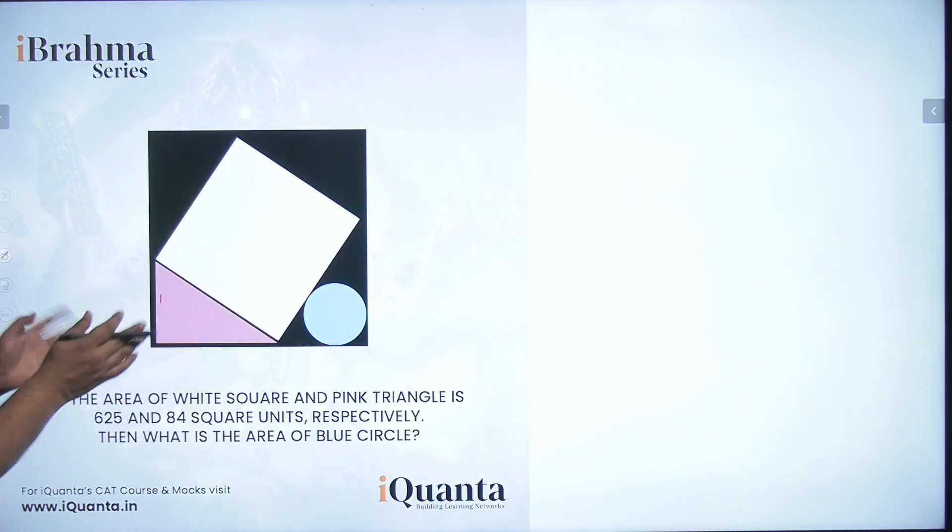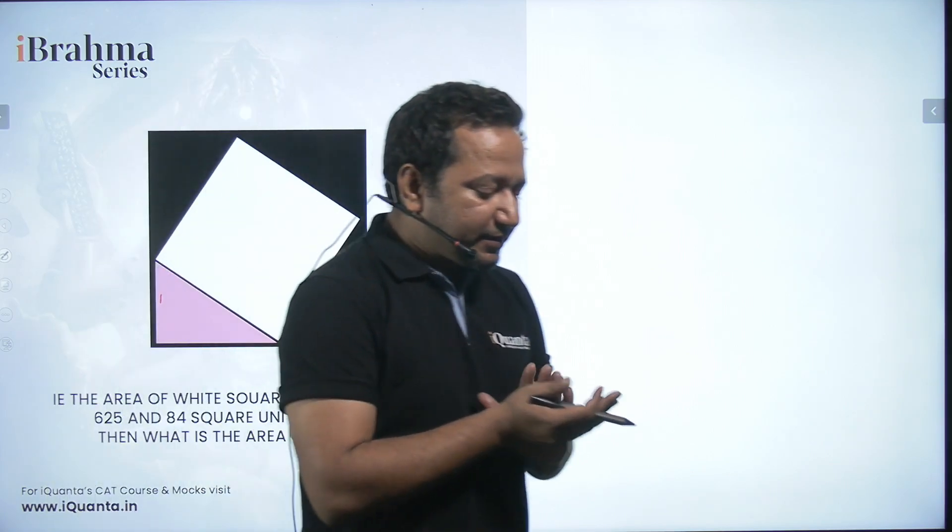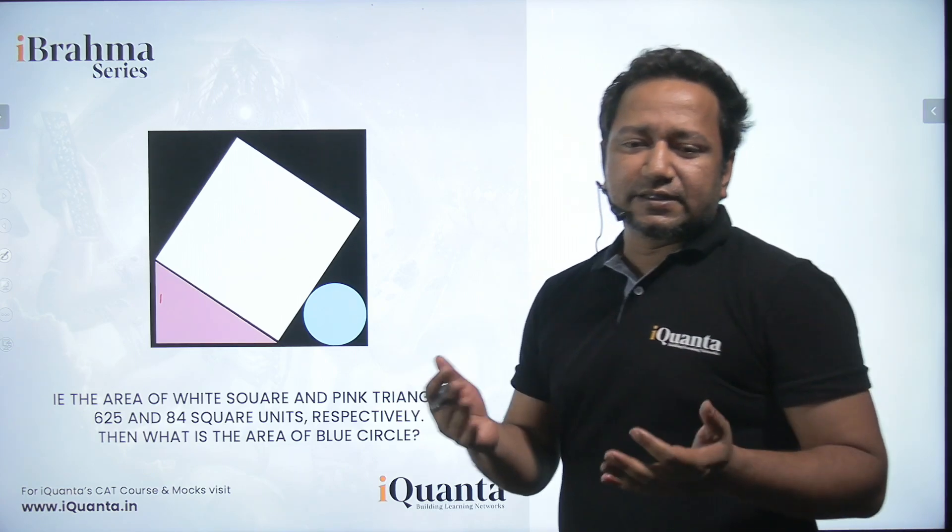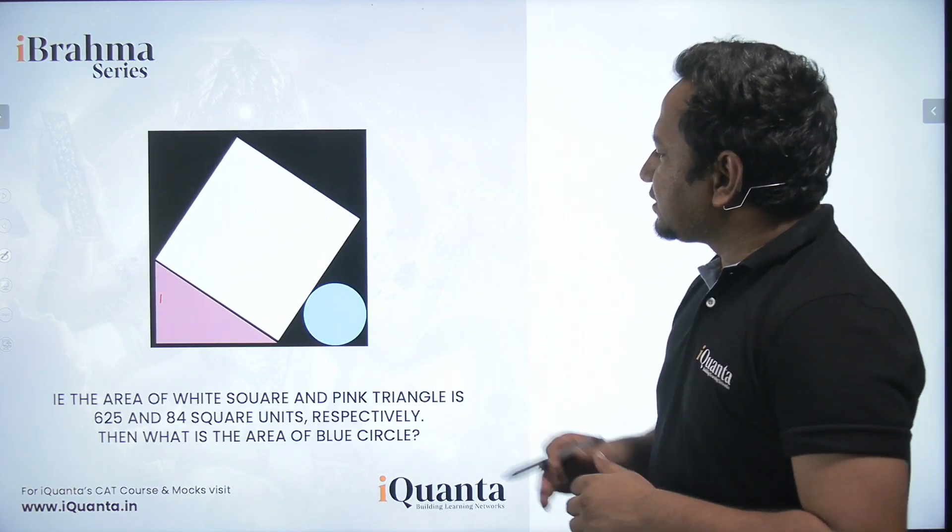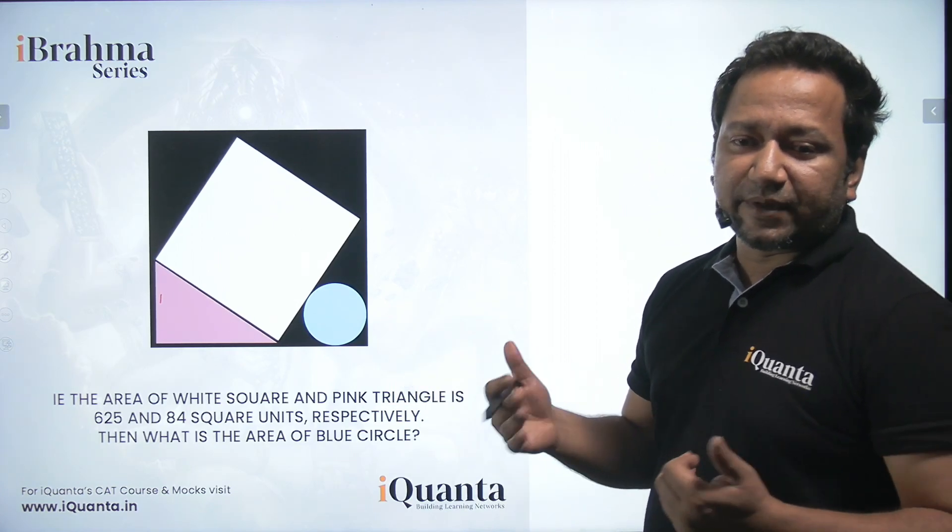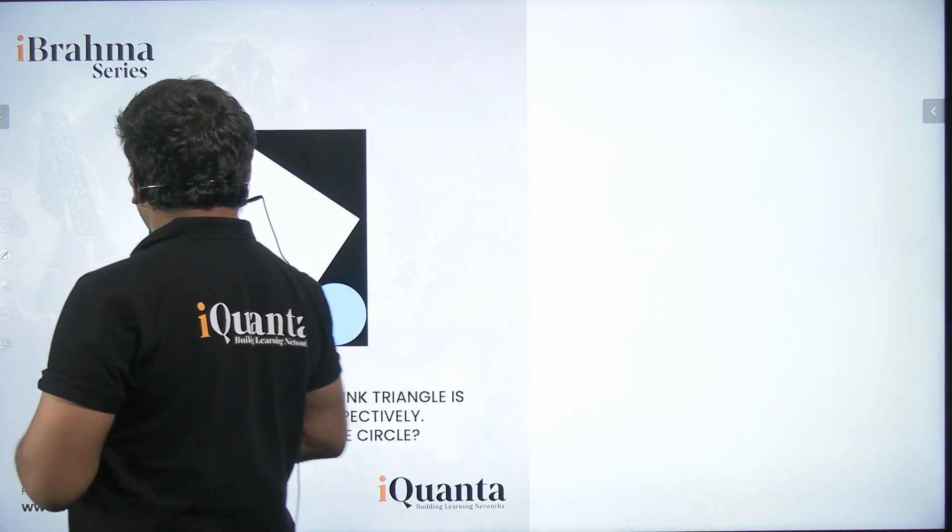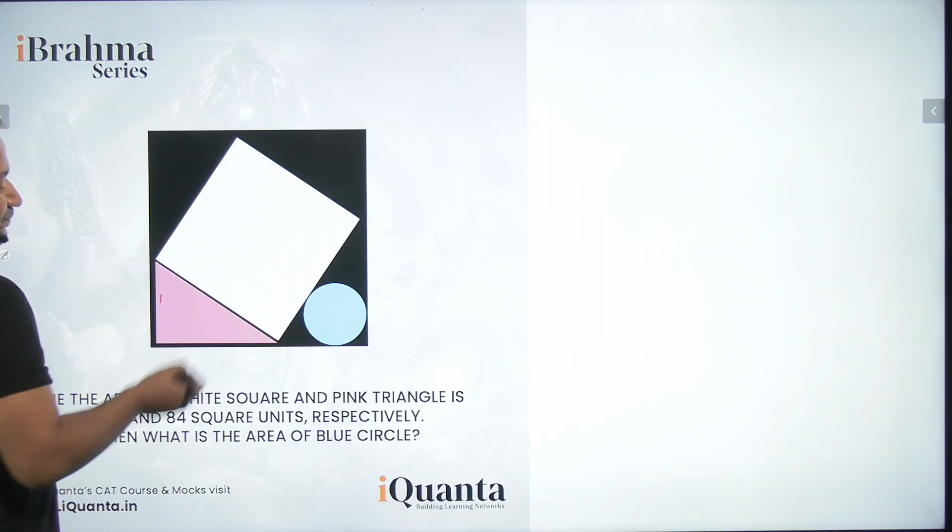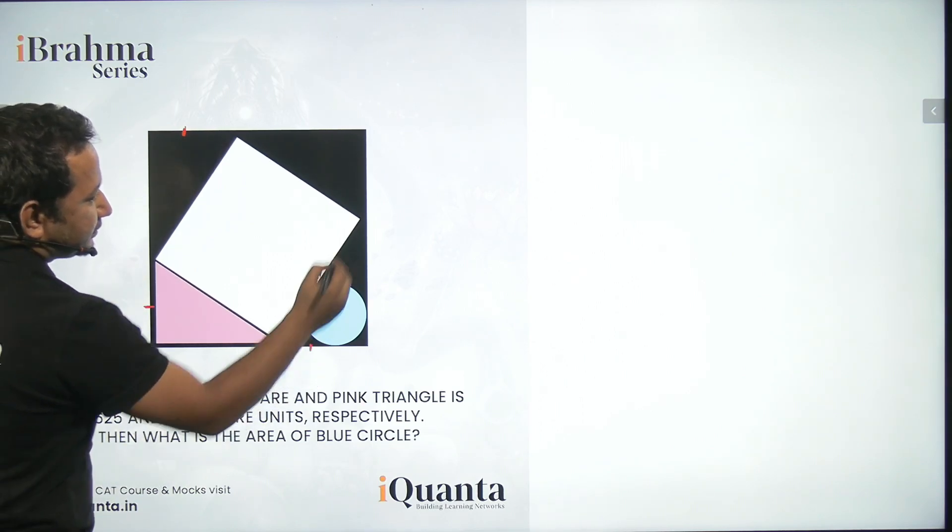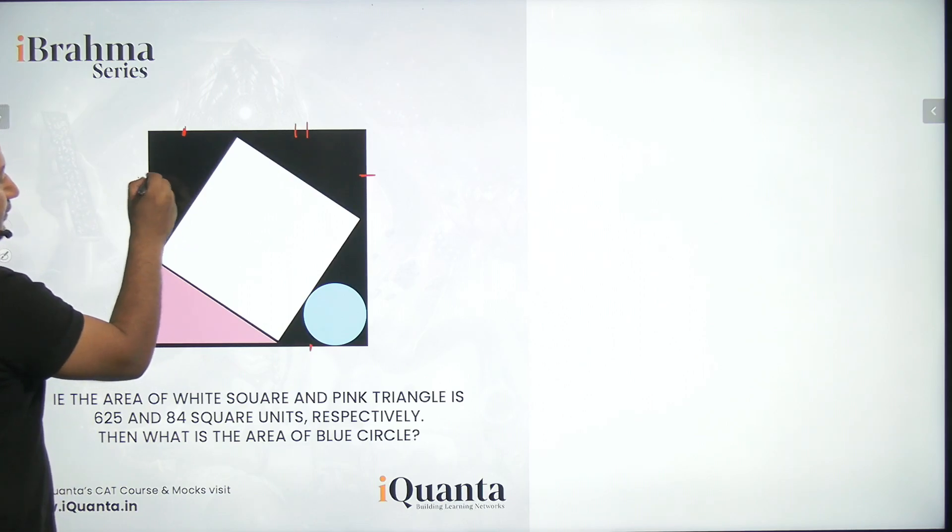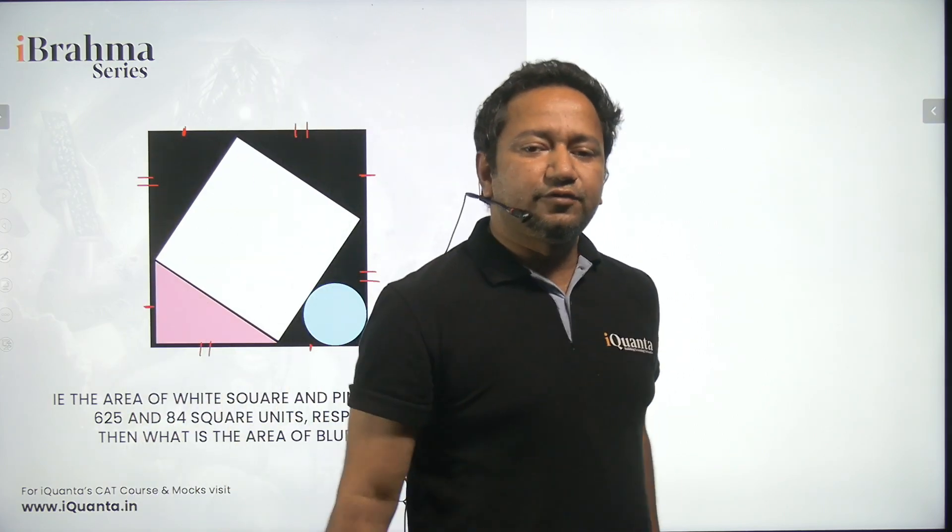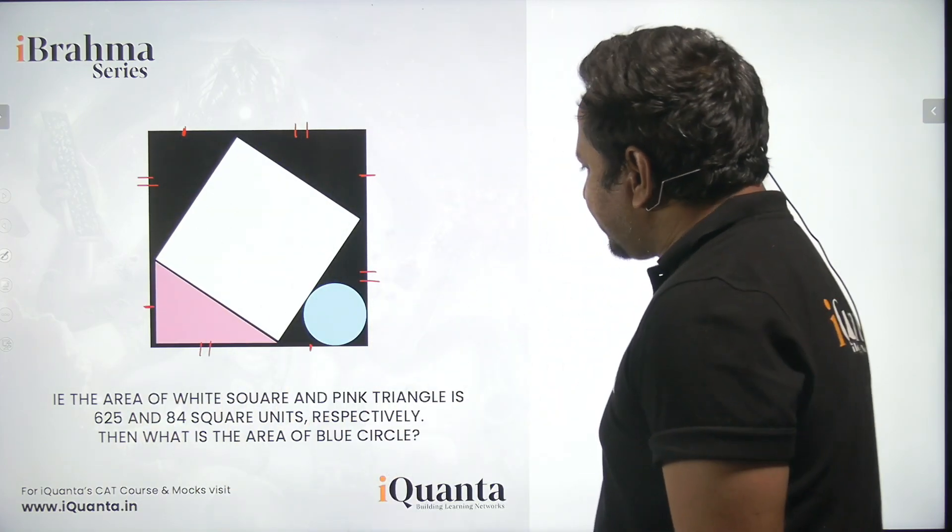Here you can see a black square with one white square inscribed inside it in such a way. Whenever a square is a regular figure, all the sides are equal. This side will be equal to this side, and similarly these sides will be equal because the square is always a regular figure. Once we have established this, we can move on to the question.